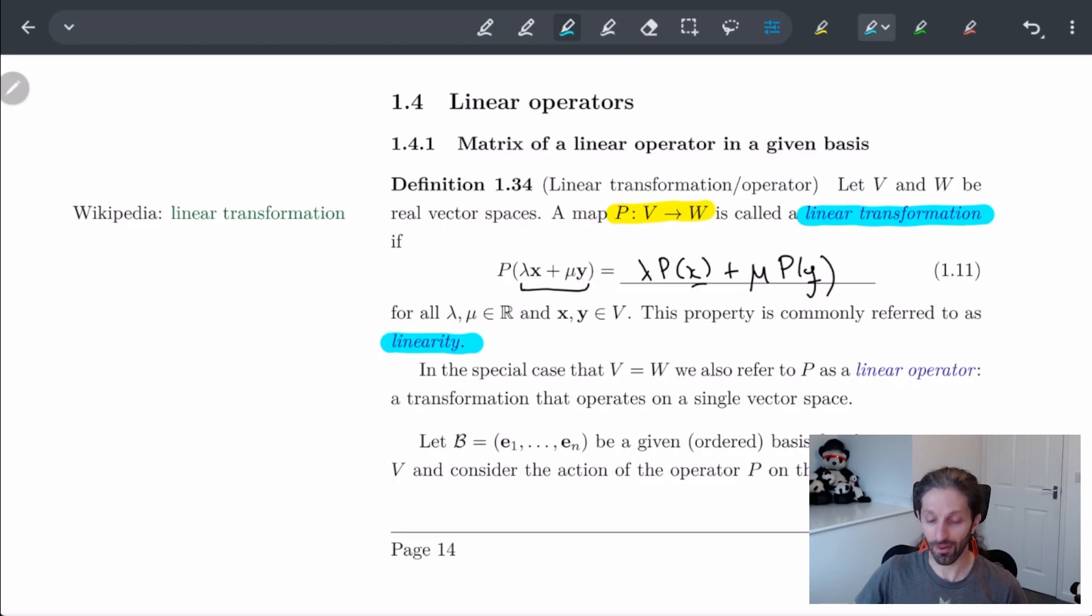If we have furthermore that V is equal to W, sometimes we'll say that it's a linear operator. And the reason why we use the term operator is because an operator basically operates on one single vector space. So it kind of stays within itself.